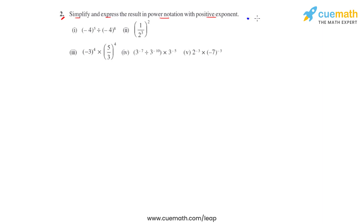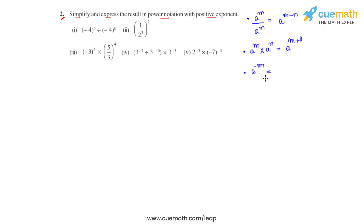We have a raised to m divided by a raised to n — the bases are same and they're in division, so the powers get subtracted: a raised to m minus n. Second, a raised to m times a raised to n — bases are same in multiplication, so powers get added: a raised to m plus n. Third, a raised to negative m — to get a positive power, we write it as 1 over a raised to m.